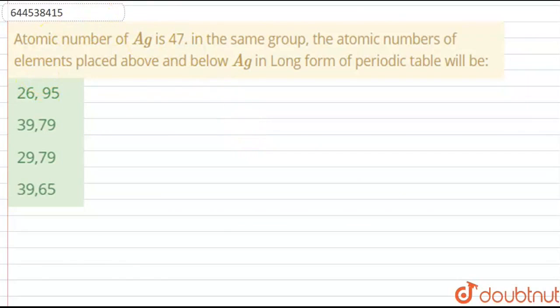So the question that we have is, atomic number of Ag is 47. So this Ag is silver. In the same group, the atomic number of elements placed above and below silver in long form of periodic table will be.